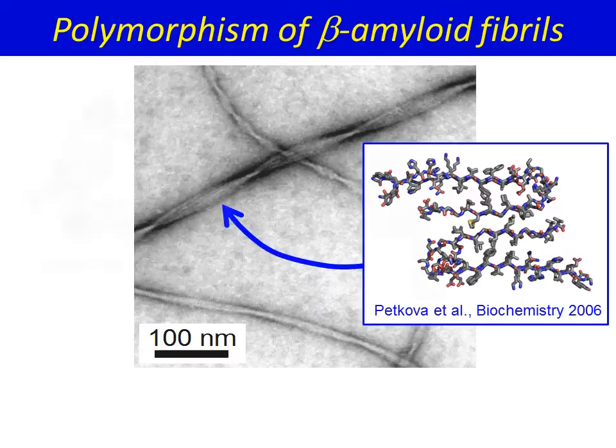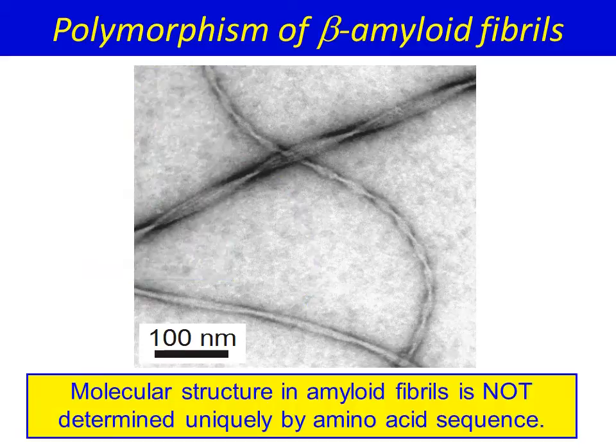My lab has studied the molecular structures of A-beta fibrils formed in vitro since 1998, primarily using solid-state nuclear magnetic resonance, or solid-state NMR, combined with electron microscopy and other measurements. One of our early findings was that A-beta fibrils are polymorphic at the molecular level, meaning that fibrils with different appearances in electron microscope images, such as the three fibrils in this image, have different internal molecular structures.